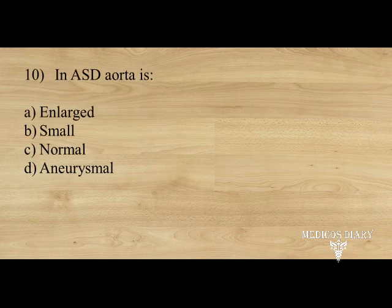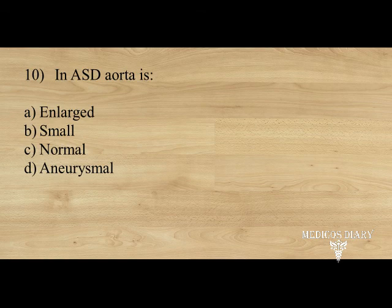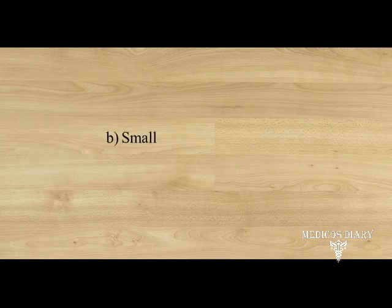In ASD, the aorta is: option A. enlarged, B. small, C. normal, D. aneurysmal. Answer: option B, small. The thoracic roentgenogram shows mild to moderate cardiomegaly, right atrial and right ventricular enlargement, prominent main pulmonary segment, and a relatively small aortic shadow. So in ASD, the aorta is small.